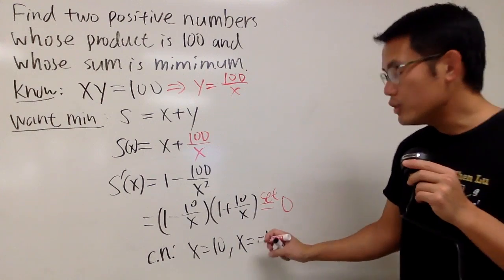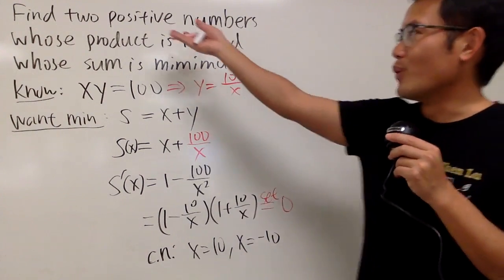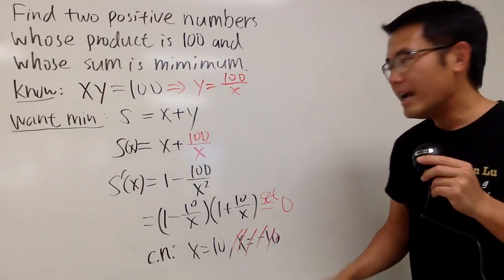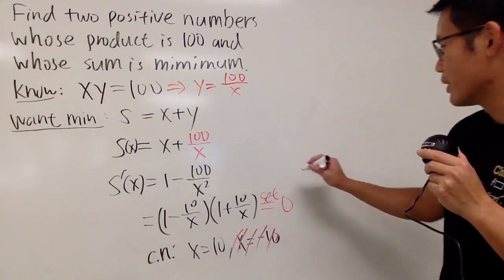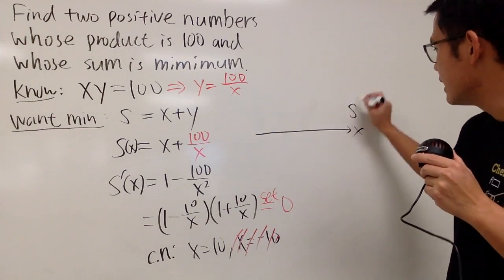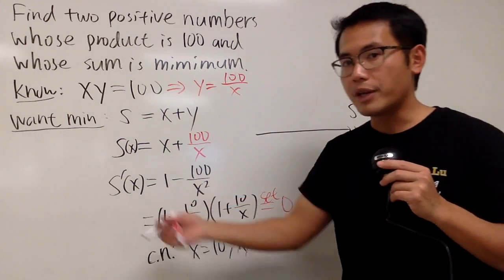And in fact, we don't need to care about negative 10 because we're looking for two positive numbers. So this right here is actually out of our consideration. And now let's just do a number line test real quick. So I will just put this down right here. This is x and this is S prime.